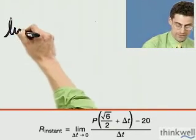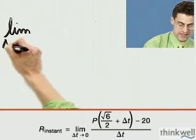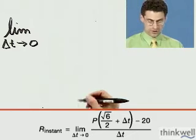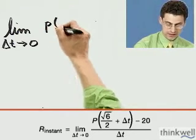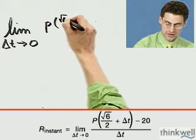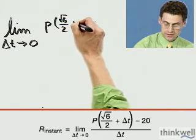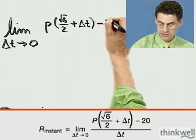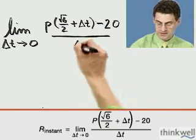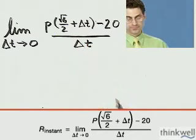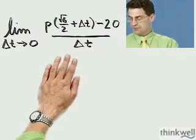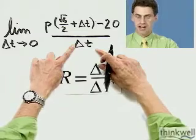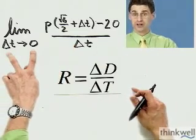We want to find the limit as Delta T approaches zero of P evaluated at the square root of 6 over 2 plus Delta T, that complicated-looking thing, minus 20, divided by Delta T. That's what's written there. Remember where that came from — it's just the change in distance divided by the change in time, but now I'm letting that change in time approach zero.